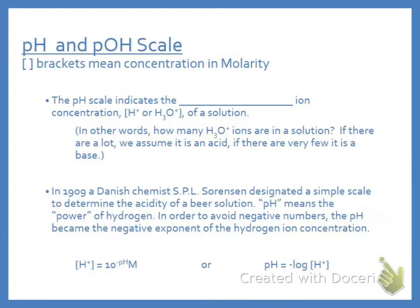First of all, when we're talking about pH and pOH, if something is in brackets it means we're talking about the concentration of it in molarity. Molarity we did last unit with solutions, its concentration is moles per liter. When we're talking about acids and bases, we're going to talk about in terms of their hydrogen concentration and their hydroxide concentration. So the pH scale is going to indicate the hydrogen ion concentration.